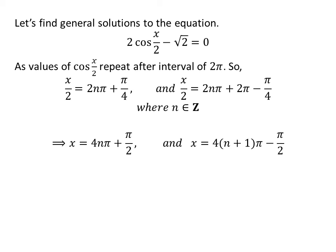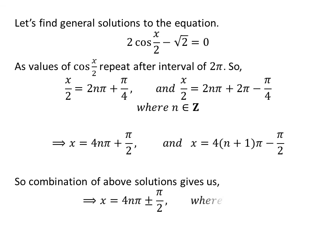Multiplication of both equations by 2 and further simplification gives us the general solutions: 4 times n times pi plus pi upon 2, and 4 times n plus 1 times pi minus pi upon 2. Combining these gives the general solution of the equation as 4 times n times pi plus or minus pi upon 2, where n is an integer.